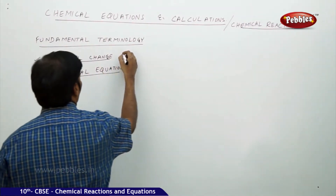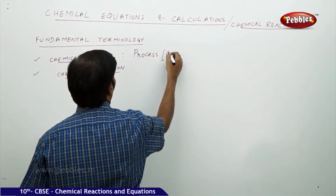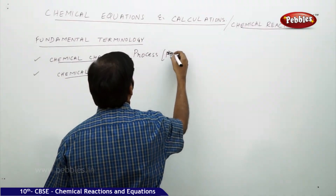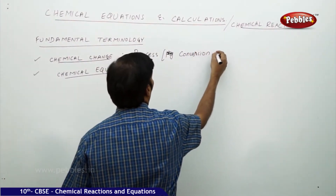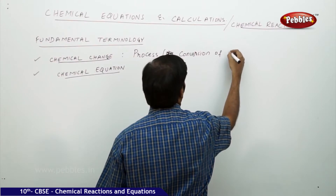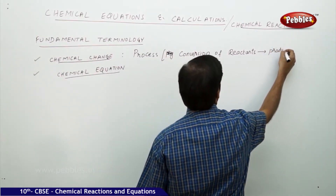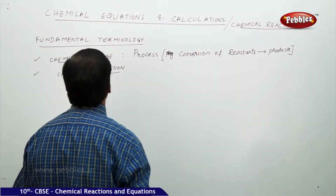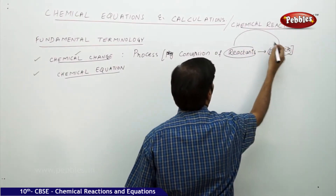What do you mean by chemical change? When you say chemical change, it is not a physical process. It is the process which involves the conversion of reactants to products. This conversion of reactants to products is simply a chemical reaction.